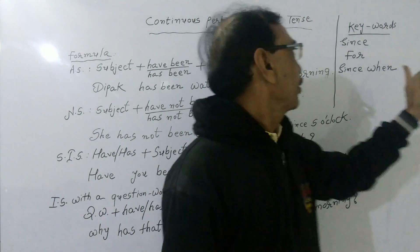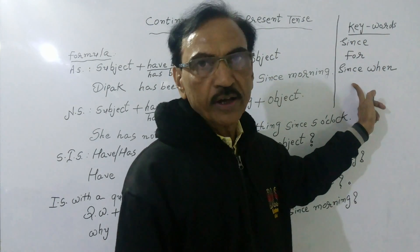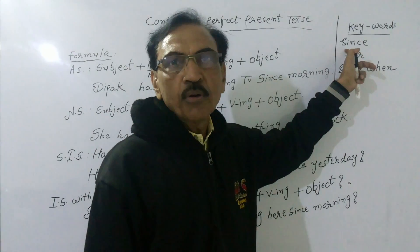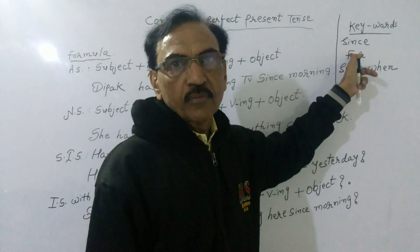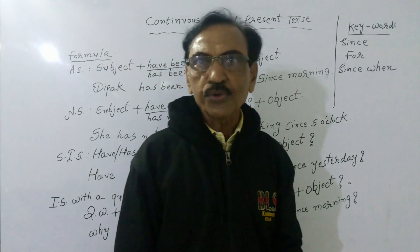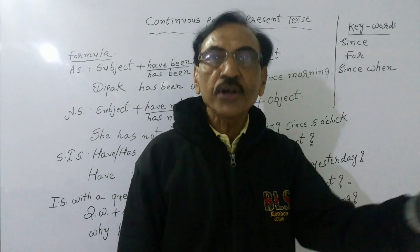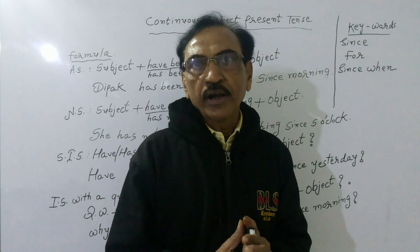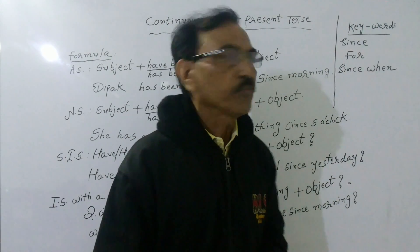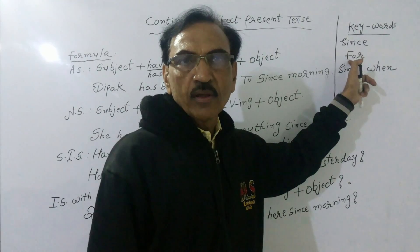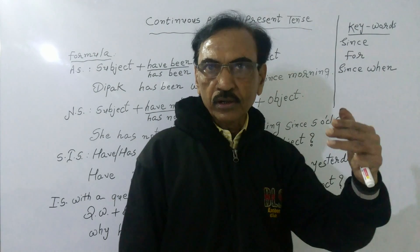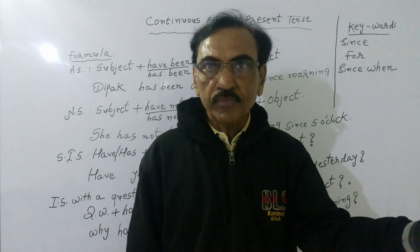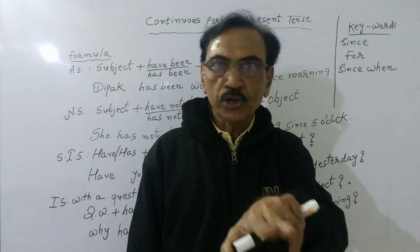And these are the keywords: 'since' and 'for'. Since denotes point of time — since 1980, since morning, since yesterday evening. If you want to convey the idea of a duration of time, we have to use 'for'. For example: 'I have not seen my brother for many days.' So 'for' denotes duration of time.